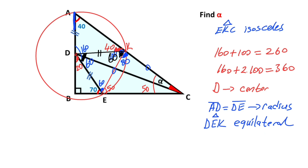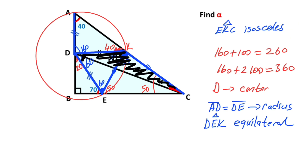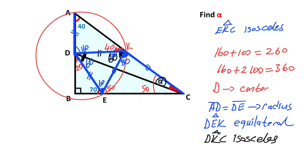Now if we use blue color to show the sides that are equal — sides 1, 2, 3, and 4 and the last one. Now if you focus on triangle DKC, this triangle is also an isosceles triangle.